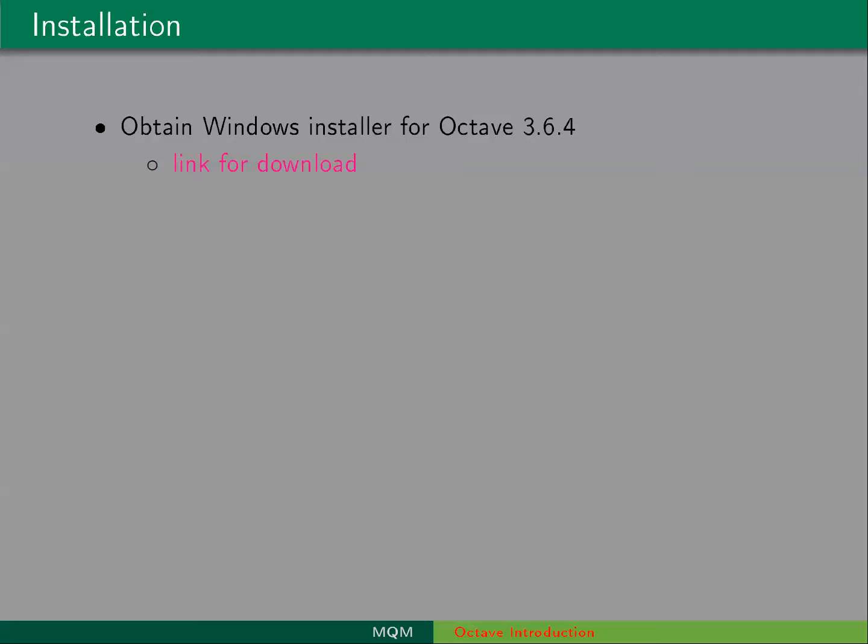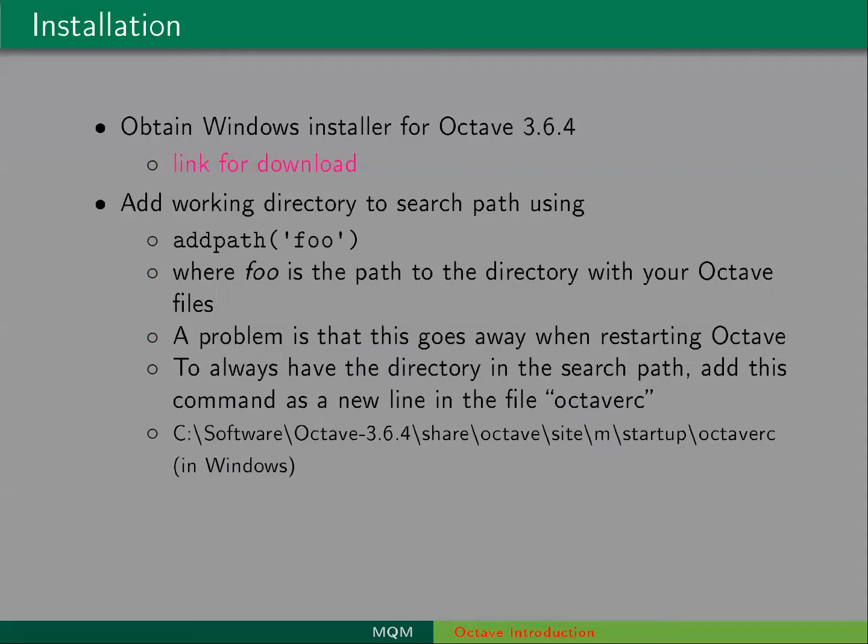If you're in Linux, then it's a lot easier. In order to use the programs that we're going to write for Octave, they're called scripts and functions, then you'll want to have your working directory in the search path. You can use the command add path and then in quotation marks the path to the directory that has your Octave files in it.